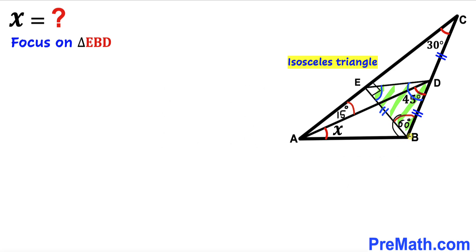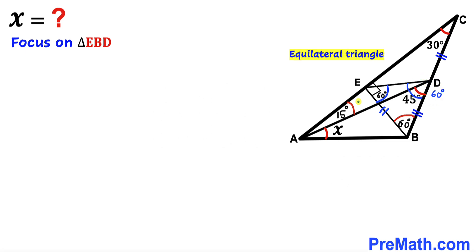We know angle EBC is 60 degrees, so the two congruent base angles are also 60 degrees each. Therefore, all three angles of triangle EBD are 60 degrees, which means triangle EBD is an equilateral triangle and all three side lengths are equal.